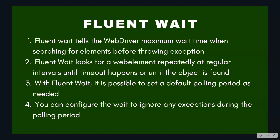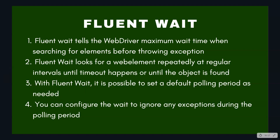In fluent wait you have the option to specify the polling time and the actual timeout. For example, if you specify five seconds as the polling time and 30 seconds as the timeout, every five seconds the WebDriver will keep looking for that particular web element. If it finds it, it will move ahead; otherwise it will keep polling every five seconds until it finds the web element or the 30-second timeout expires — that means it will poll up to six times.